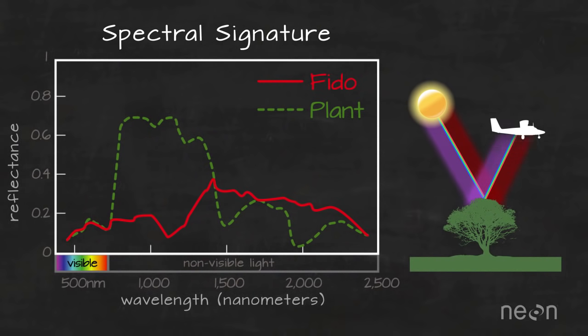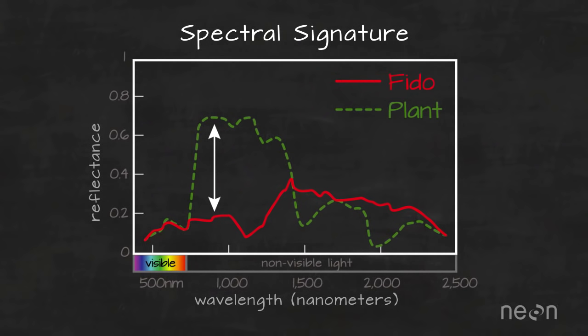For example, plants reflect up to 60% more light in the near-infrared portion of the electromagnetic spectrum than they do in the green portion of the spectrum. This is why differences in reflected light in the near-infrared portion of the spectrum are important for mapping vegetation on the ground.